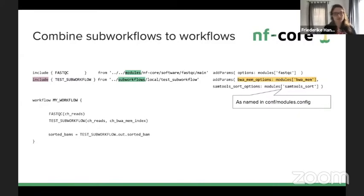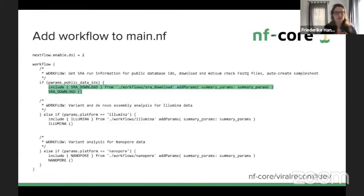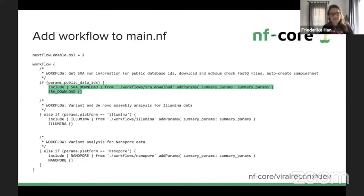In the workflow NF, FastQC is run on the input reads, and the subworkflow runs on reads and the index to produce sorted BAMs output. Looking at the main NF from viral recon, there are three different workflows dependent on input data, and the whole main NF becomes really lean — less than 100 lines currently. This makes it easy to track which workflows run for your input data.